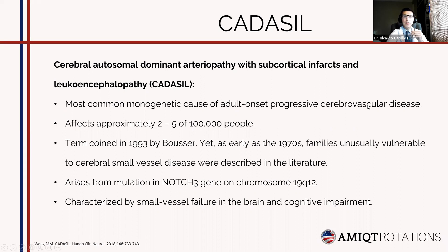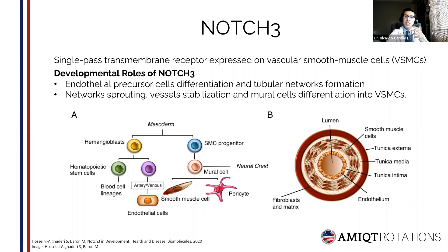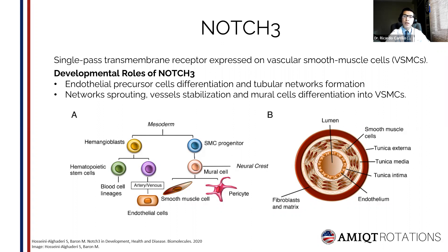We will talk a little bit about NOTCH3. The NOTCH3 protein and gene: the gene encodes for a single-pass transmembrane receptor that is expressed on vascular muscle cells, which acts as a signaling receptor to control cell fate in many developmental and adult tissue contexts. Within its developmental roles during vascular development, NOTCH3 regulates that endothelial precursor cells differentiate and form tubular networks. During angiogenesis, these networks undergo sprouting and vessels are stabilized by mural cells, which differentiate into vascular muscle cells, playing an important role because NOTCH3 promotes proliferation and protects against vascular muscle cell apoptosis.